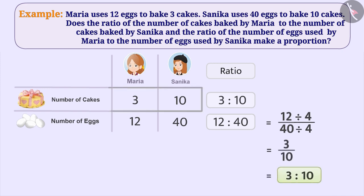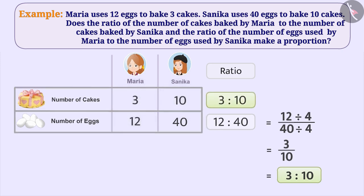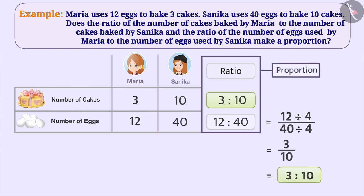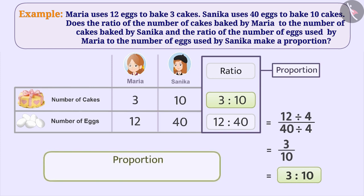As you can see, the ratio of the number of cakes to the number of cakes and the ratio of the number of eggs to the number of eggs is equal. Therefore, 3 is to 10 and 12 is to 40 make a proportion. We can express the proportion either in this way or in this way.